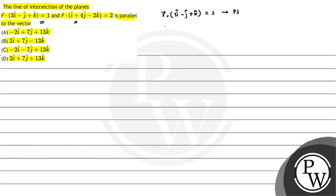And r·(i + 4j - 2k) = 2, suppose this is plane P2.